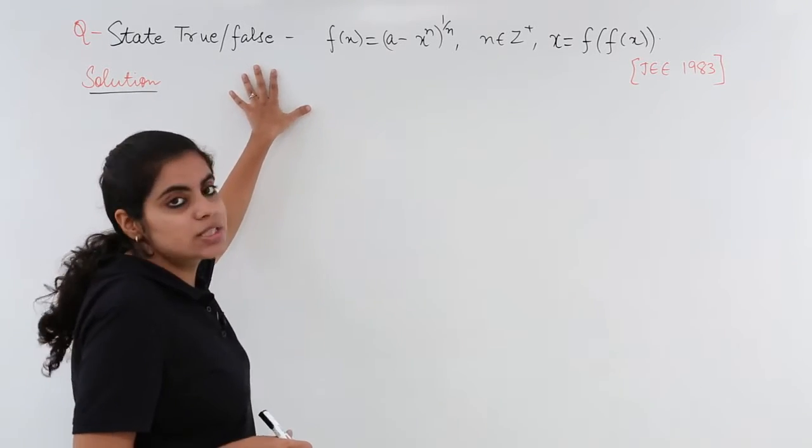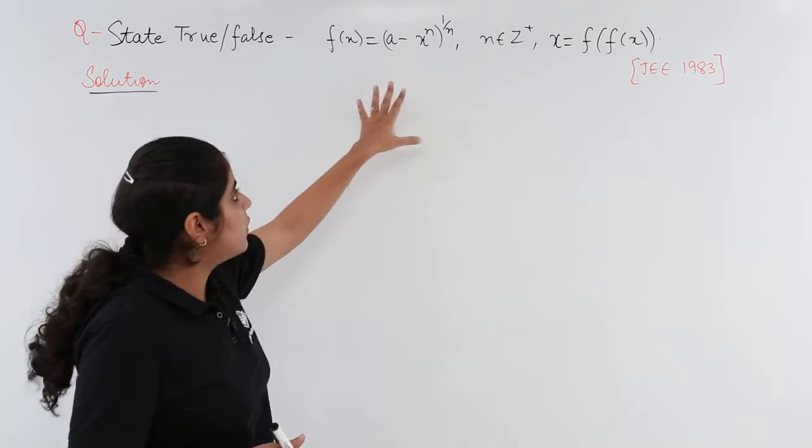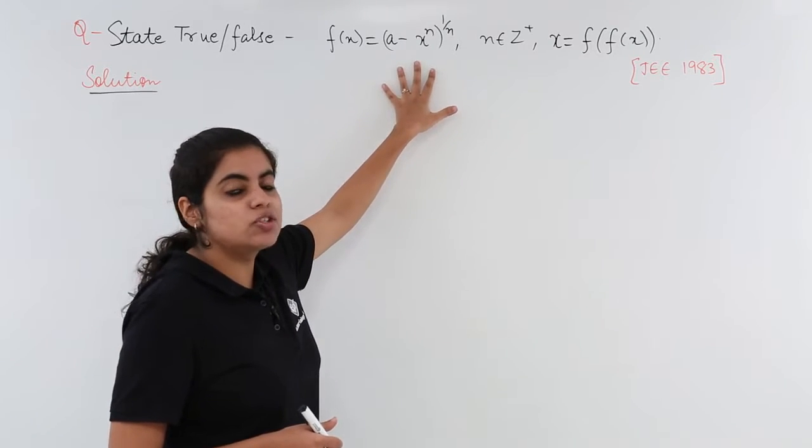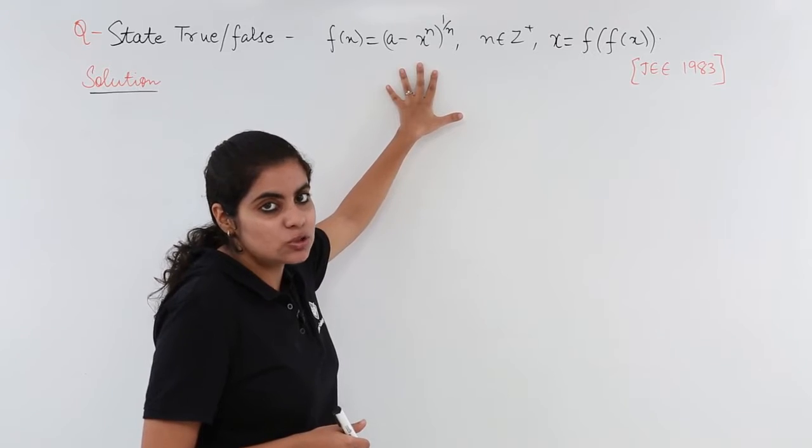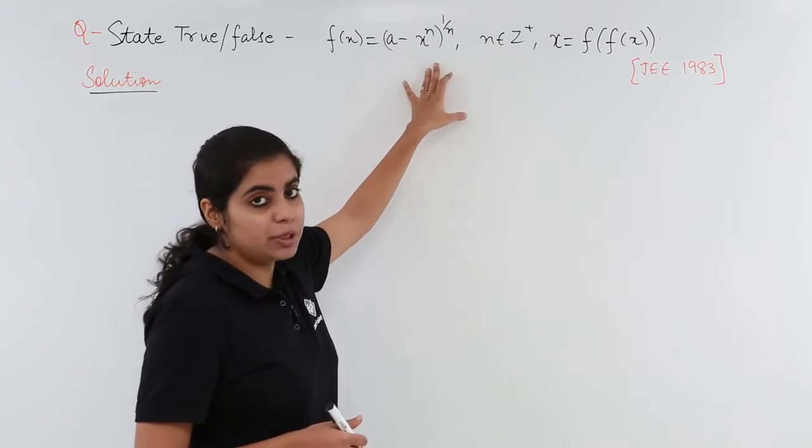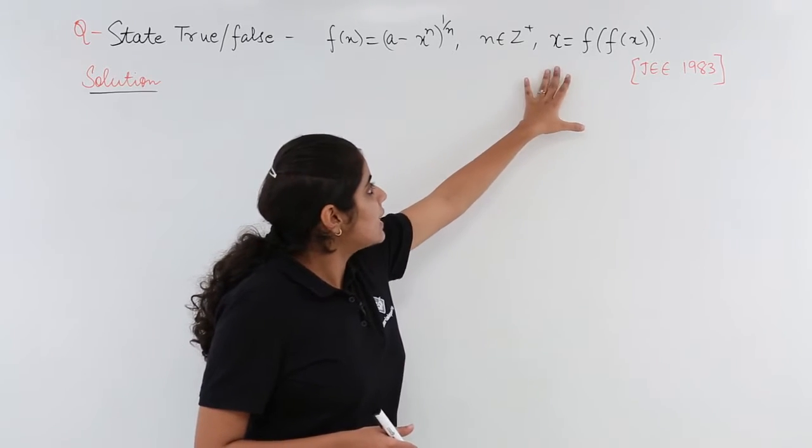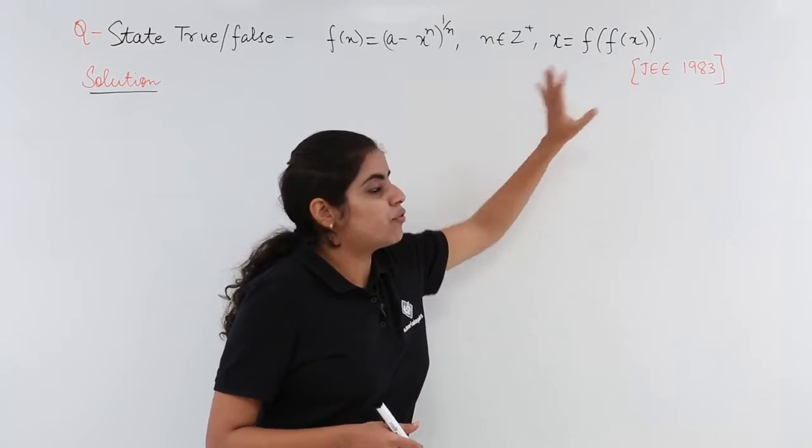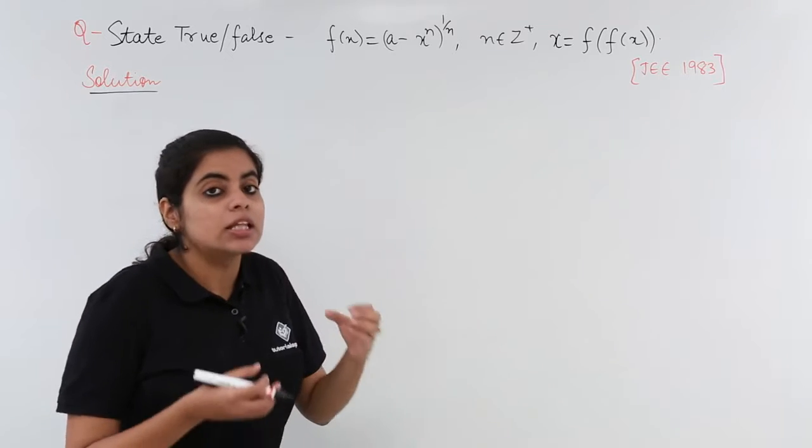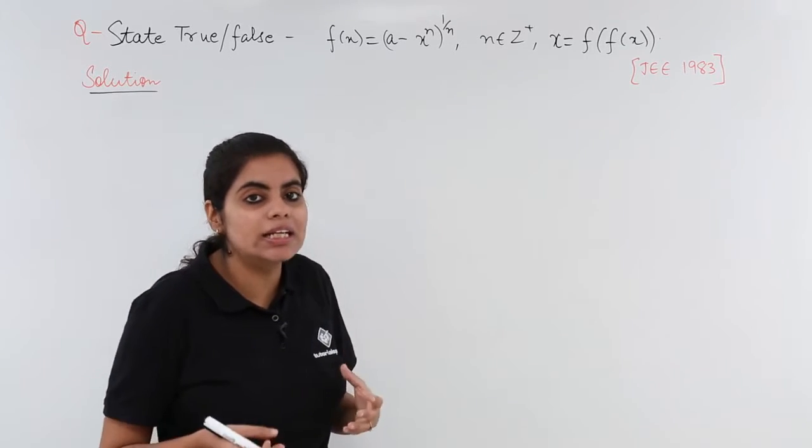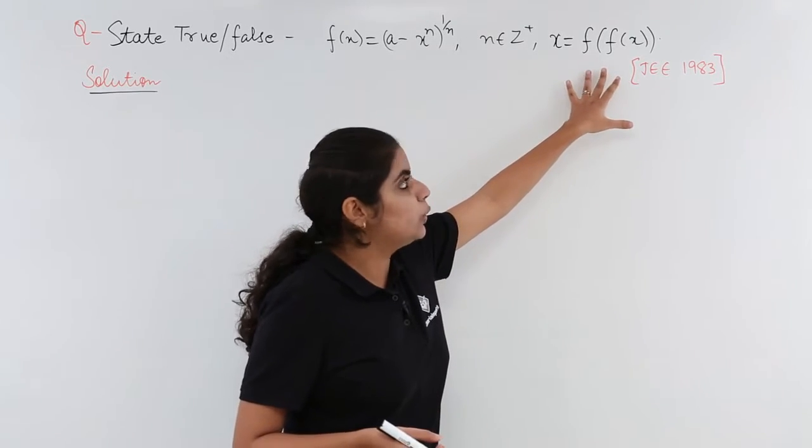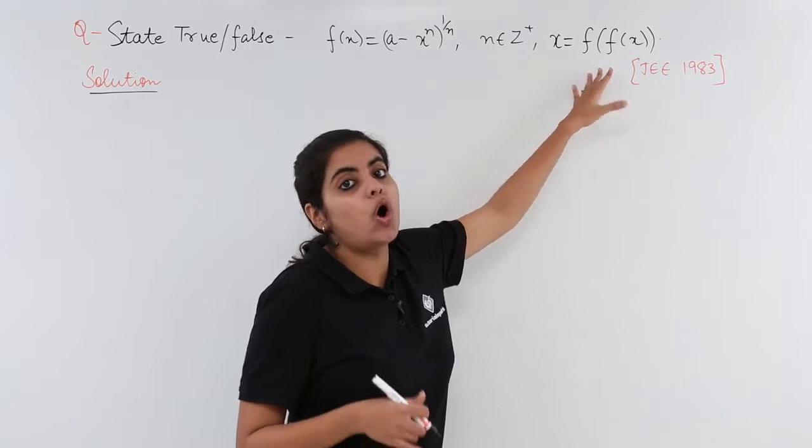The question asks me to state true or false. If f is the function given to me as (a - x^n)^(1/n) where n belongs to positive integers, the question asks me to state whether x is equal to f(f(x)) is true or it is false.